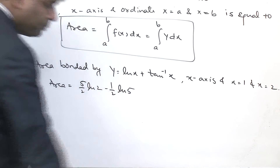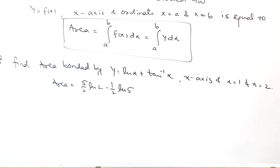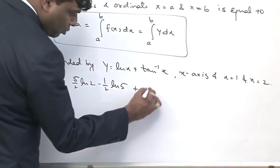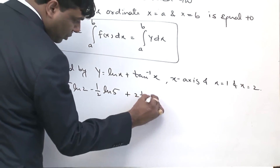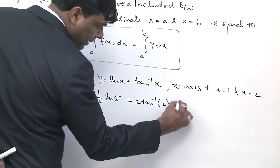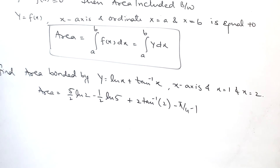The final result is: area = 2 ln(2) + 2 tan⁻¹(2) − 5/4 − 1, combining all evaluated terms from the integration.